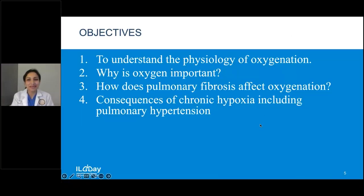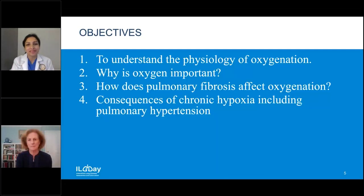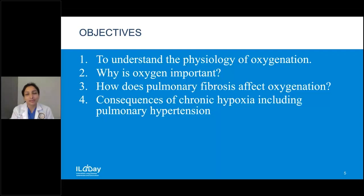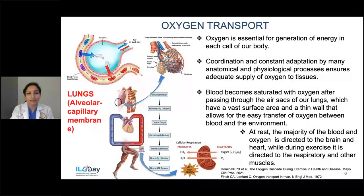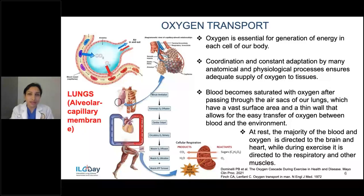Today, my job is to go over some of the anatomy and physiology aspects of oxygen and to let you know about the importance of oxygen, as well as how pulmonary fibrosis can affect oxygenation and what might be some of the symptoms of having low oxygen. Oxygen is the most essential element for our survival — it is essential for generation of energy for each and every cell of our body. Cells form our organs, organs form our organ systems, and organ systems make the body function.